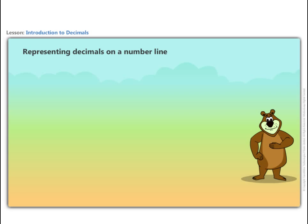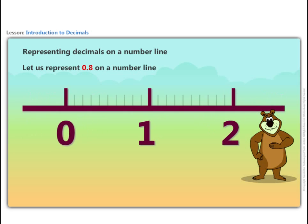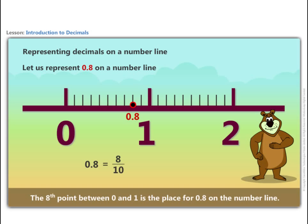Let us try representing decimals on a number line. To understand this, we start with the decimal 0.8. It is more than zero and less than one. So we divide the number line between zero and one into ten equal parts. The eighth point between zero and one is the place for 0.8 on the number line.